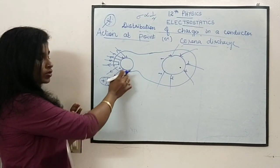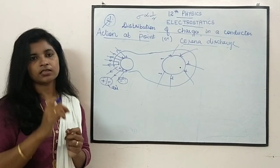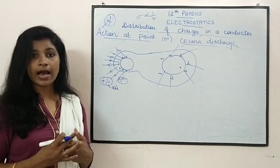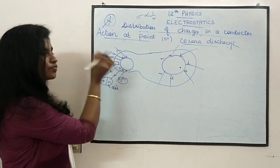The positive charge will spill out and combine with the air molecule. This concept is called action at point. The charge density will be constant. This is where this corona discharge happens, when the radius is very small.